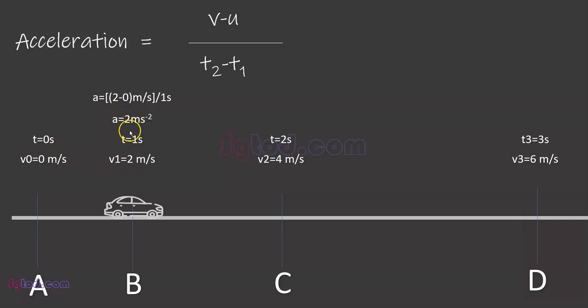Similarly, from time t equals 1 second to t equals 2 seconds, the final velocity is now 4 meters per second and the initial velocity is 2 meters per second. The acceleration works out to be 2 meters per second squared.